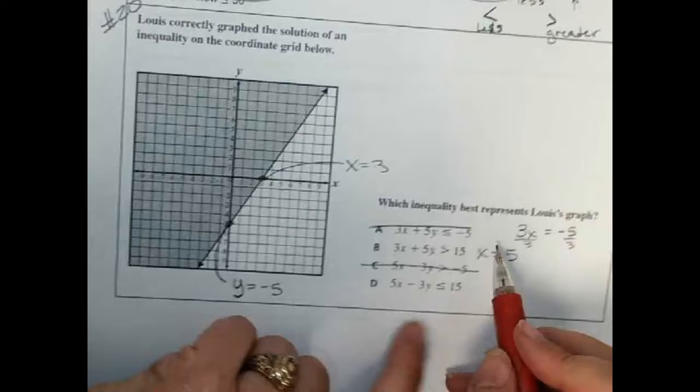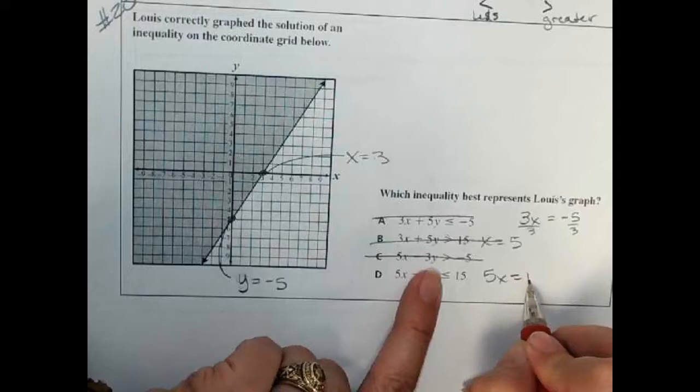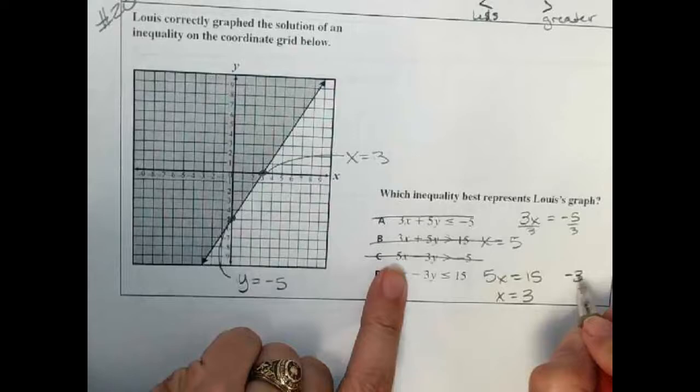Let's do this one. Cover this up: 5x equals 15, oh that's x equals 3! Now cover this one up: negative 3y equals 15. Divide by negative 3, that's y equals negative 5.